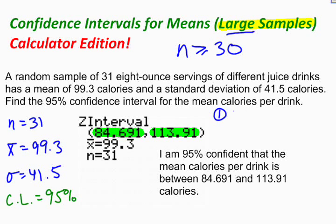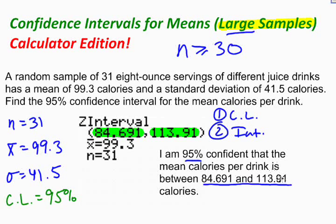Don't forget, you need to include the confidence level, which is right here, 95%. You need to include the interval itself, which is right here, 84.69 to 113.91. And then finally, the context of the problem. And I've done that by talking about calories per drink.